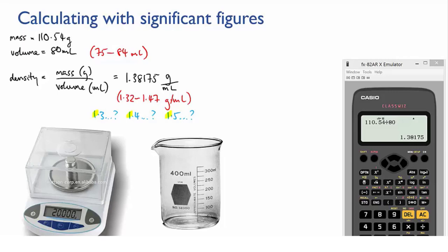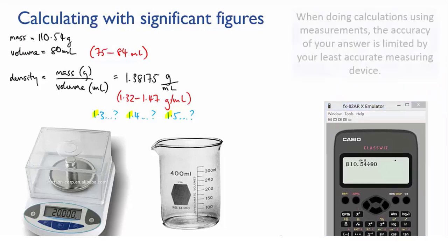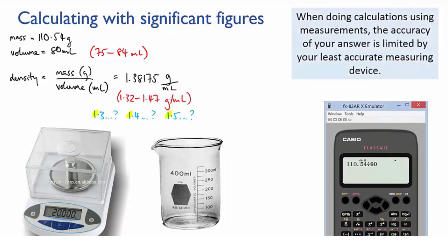So this leads me to an important point. When you're doing calculations on measurements, you're limited by the accuracy of your least accurate measuring device, which in this case was the beaker.